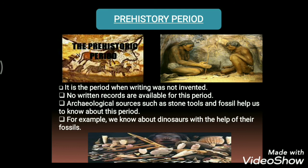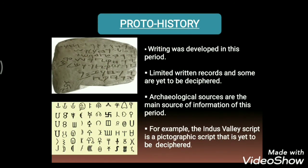The next period is proto history. The difference from prehistory is that writing was developed in this period, but limited written records exist and some are yet to be deciphered — meaning those writings could not be translated into our own language. We come to know about this period mostly from archaeological sources. For example, the Indus Valley script is a pictographic script that is yet to be deciphered.